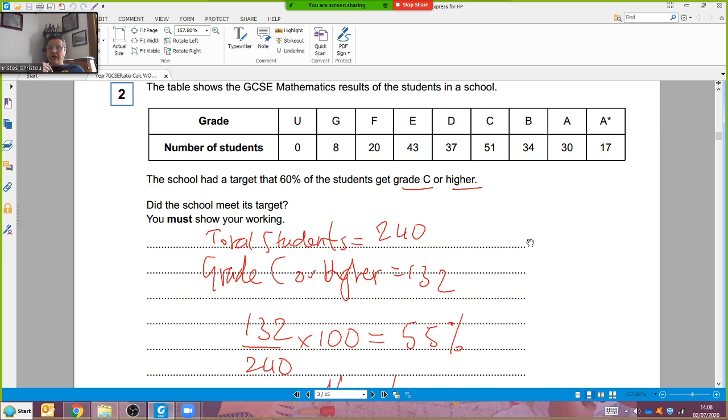The target is 60% grade C or more. Therefore, if I could work out the actual percentage, I can conclude did the school meet its target. I took my hints from the question. What do I need to do to work out the percentage of those who get C or higher? First I need all the students in the year group. You don't have to write down nothing plus 8 plus 20 plus 43, what a waste of time. Just write down total students equals 240.